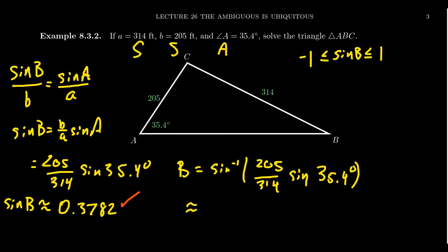We're going to use an approximation. On the calculator, if we round to the nearest tenth, we're going to end up with 22.2 degrees.